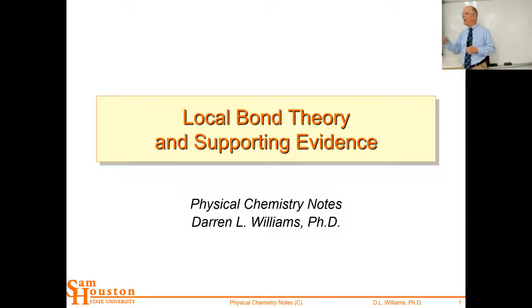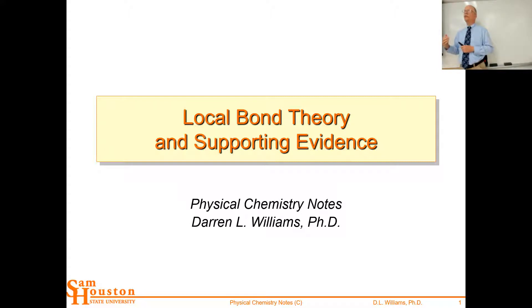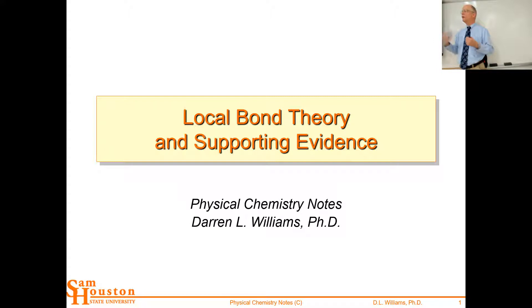Theories may explain some data points and not others. Today we're really going to focus on two theories of bonding: local bond theory and molecular orbital theory. They have strengths and weaknesses, but we've never really presented this in the chemistry curriculum up to this point. We'll talk about local bond theory and its supporting evidence, then show the results of molecular orbital theory. Beginning next lecture, we'll actually do molecular orbital theory from the bottom up, starting with dihydrogen — two electrons, two molecular orbitals.